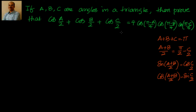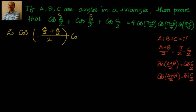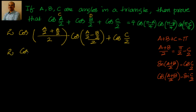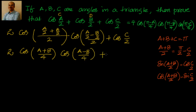So we start with the left-hand side: cos(a/2) + cos(b/2) + cos(c/2). Applying the sum-to-product formula, cos C + cos D = 2·cos((C+D)/2)·cos((C−D)/2), with C = a/2 and D = b/2, this becomes 2·cos((a+b)/4)·cos((a−b)/4) plus cos(c/2).